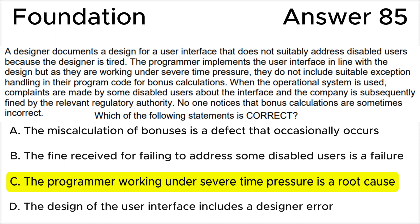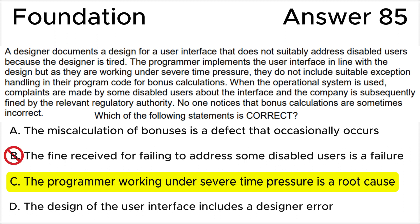All the rest of the answers are wrong. Answer A is incorrect because the miscalculation of bonuses is a failure by the system, not a defect — don't mix up these terms. Answer B is incorrect because the system not suitably supporting disabled users is a failure, which eventually results in a fine, but the fine itself is not a failure — it appears to be the correct functioning of the regulatory system.